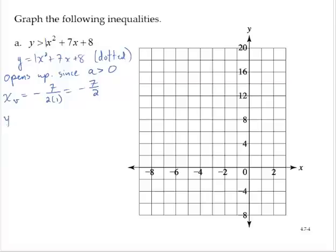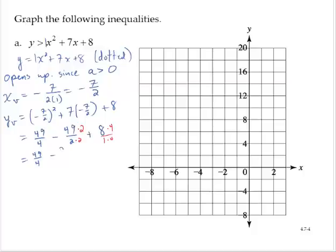So now finding the y-coordinate of the vertex. The y-coordinate of the vertex would be x squared plus 7x plus 8. And so that's 49 over 4 minus 49 over 2 plus 8. Let's get this all in terms of fourths. So I'll multiply by 2's and by 4's in the third term. So that would give me 49 over 4 minus 98 over 4 plus 32 over 4.